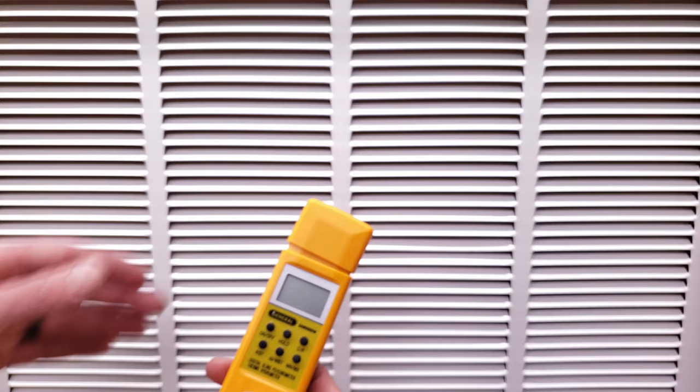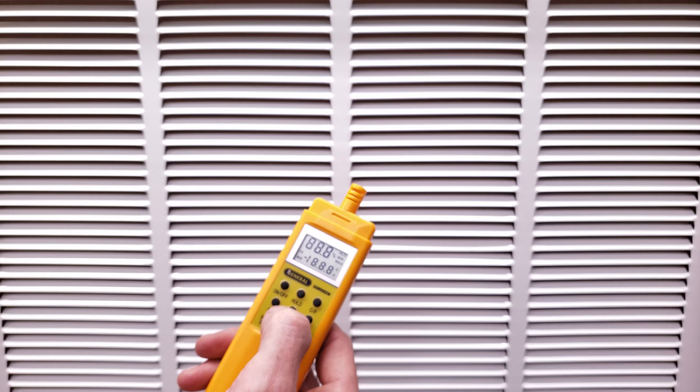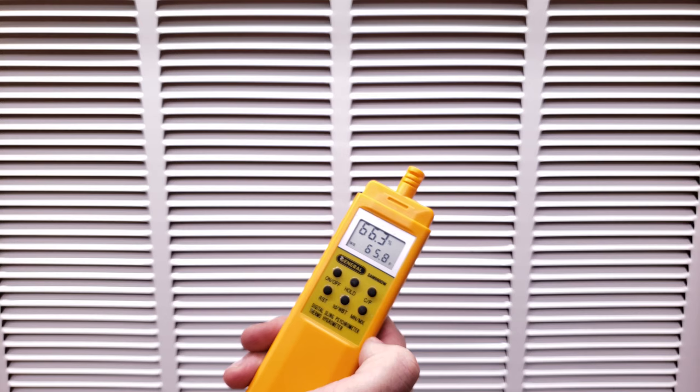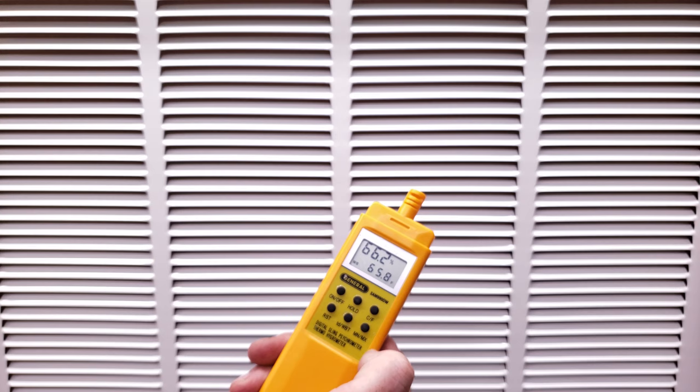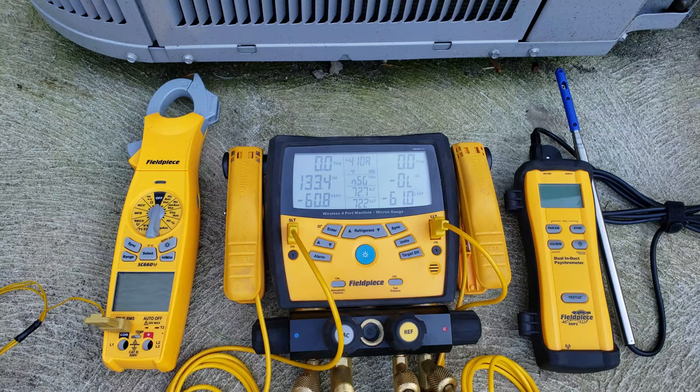Here's another digital psychrometer, and we're just going to turn it on, and then we're going to press our wet bulb, hold that in, and we'll hit it again. And now we have our reading. So we are at 65.8 once again.